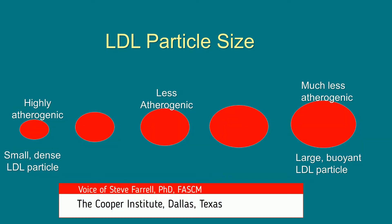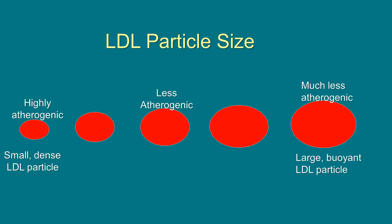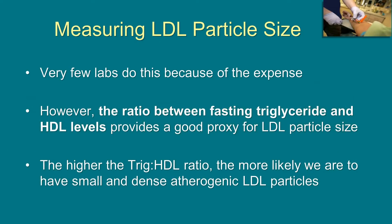On the left-hand side of the slide, we see the highly atherogenic small dense LDL particles, and on the right-hand side, the more innocuous large buoyant or fluffy LDL particles, which are much less atherogenic. Many labs choose not to measure LDL particle size because it's very expensive. But about 20 years ago, we found that the ratio between fasting triglyceride level and HDL cholesterol level provides a pretty good proxy for LDL particle size — in that the higher the triglyceride-to-HDL ratio, the more likely we are to have the small dense atherogenic LDL particle size.